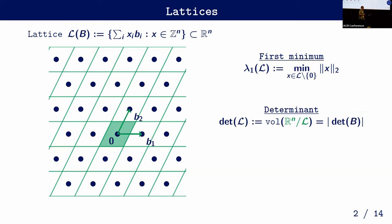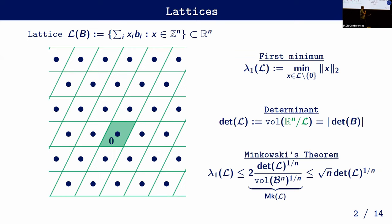These two geometric properties are related by Minkowski's theorem, which says the first minimum is upper bounded by a quantity that depends on the normalized determinant of the lattice — roughly square root of n times this normalized determinant, up to constants. To do cryptography with lattices, we need some hard problems.